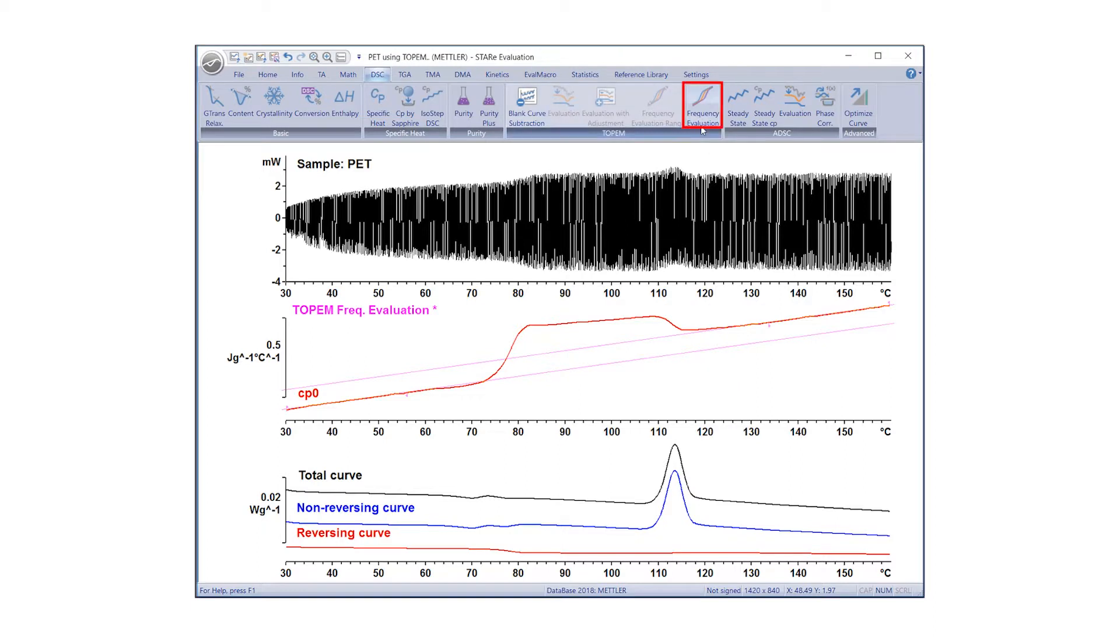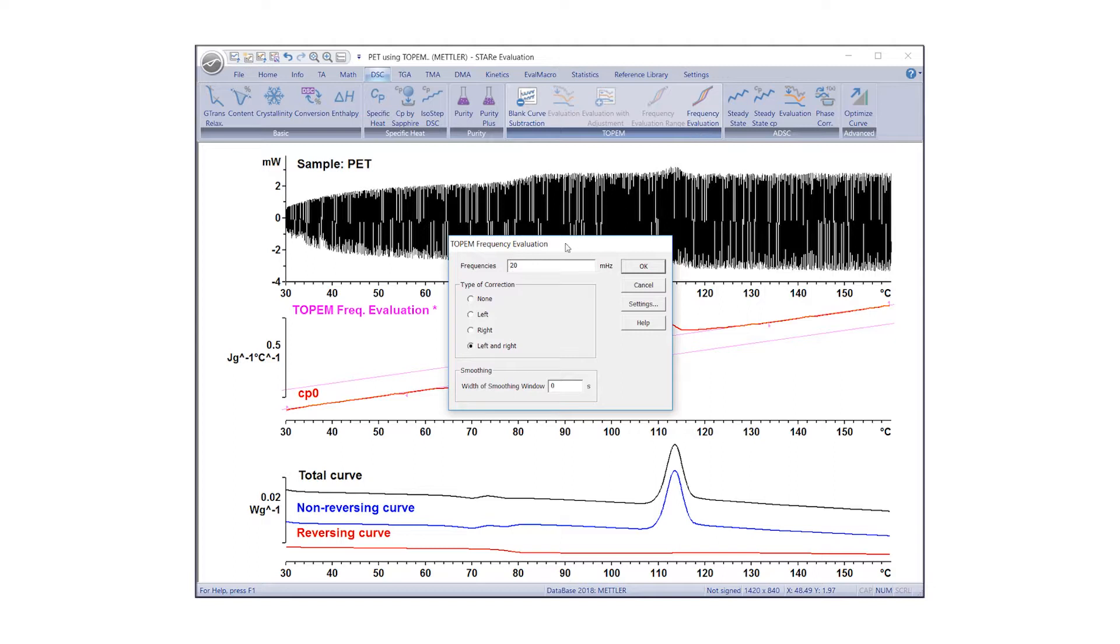Now, click on the Frequency Evaluation command and enter the desired frequencies at which the CP curve should be calculated. In this case, 16.7 mHz.